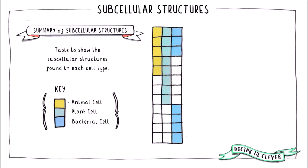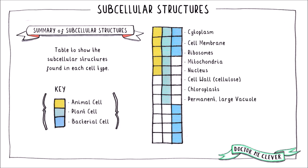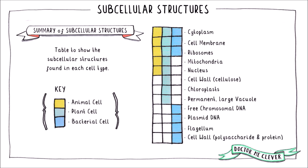To summarize, there are three subcellular structures common to animal, plant, and bacterial cells: the cytoplasm, cell membrane, and ribosomes. There are two common to animal and plant but not bacterial cells: the mitochondria and nucleus. There are three unique to plant cells: the cellulose cell wall, chloroplasts, and the permanent large vacuole. And there are four unique to bacterial cells: free chromosomal DNA, plasmid DNA, the flagellum, and a cell wall made from polysaccharides and protein.